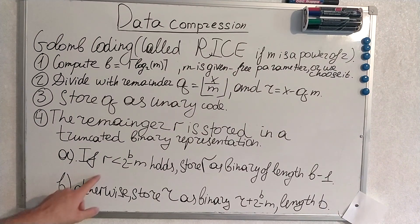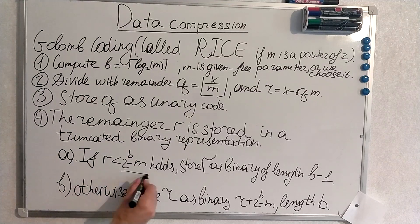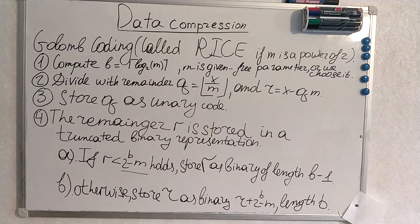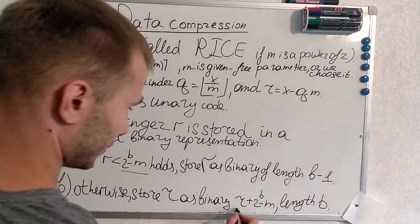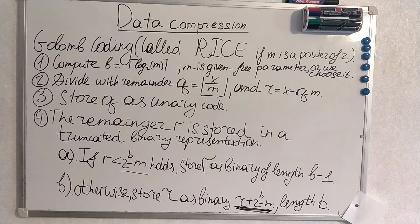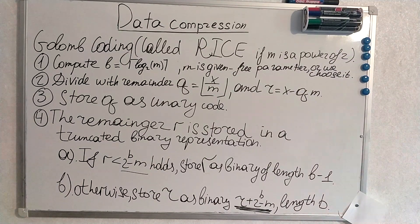There are two conditions. If r is smaller than 2 power of b minus m, if this inequality holds, store r as binary of length b minus 1. Otherwise, store r as binary number with the length of b. Now I will give you some examples which describe a whole specter of possibilities of this algorithm and it will become clear if it's not. You can also pause it and write it down if you want.